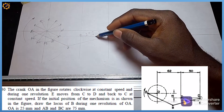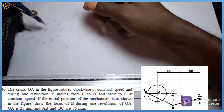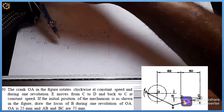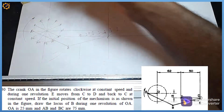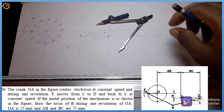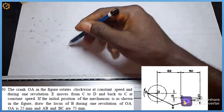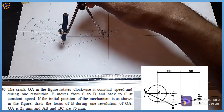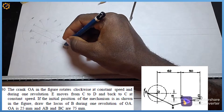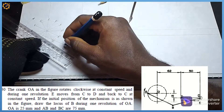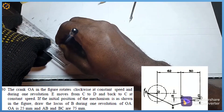Next, I pick my compass and set the distance to 75mm — the length AB. On mark A1 I strike my arc. The question states that point E moves from C to D, so starting from C, the first position on the slider is C1 (mark C5 on the division scale). On mark C1/C5 with radius 75 I strike another arc. Where they intersect is mark B1.